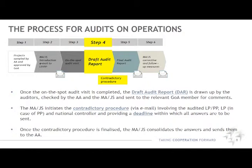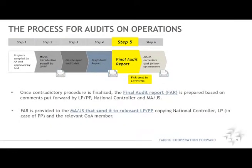The draft audit report will automatically become final if there are no findings. Once the contradictory procedure is finalized, the MAJS consolidates the answers and sends them to the audit authority. The final audit report is prepared based on the comments put forward by the lead partner, project partner, national controller, and the MAJS. The auditors decide whether the findings persist or if they should be lifted due to the clarifications given during the contradictory phase. The final audit report is then provided to the MAJS, who send it to the relevant lead partner or project partner, copying the national controller, the lead partner in case of a project partner, and the relevant GOA member.